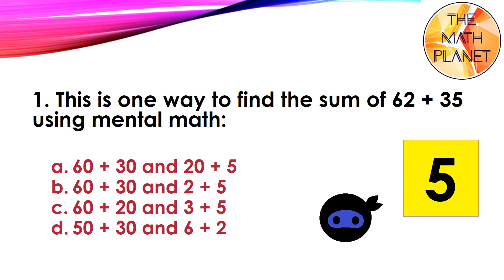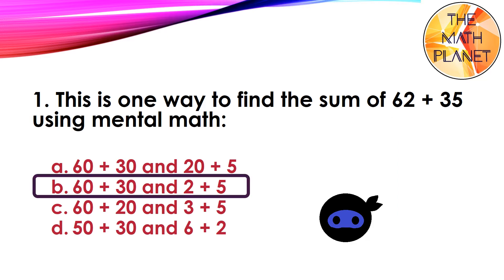This is one way to find the sum of 62 plus 35 using mental math. Is it 60 plus 30 and 20 plus 5, or 60 plus 30 and 2 plus 5, or 60 plus 20 and 3 plus 5, or 50 plus 30 and 6 plus 2? The correct answer is B: 60 plus 30 and 2 plus 5.